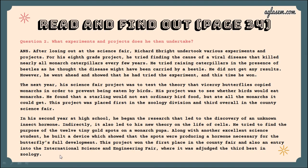Question number two: what experiments and projects did he undertake? After losing at the science fair, Richard undertook various experiments. For his eighth grade project, he tried finding the cause of a viral disease that killed nearly all monarch caterpillars every few years. He tried raising caterpillars in the presence of beetles, as he thought the disease might be carried by beetles. He won that year. His next project was to test the theory that viceroy butterflies copy monarchs to avoid being eaten by birds. He found that starlings would eat all the monarchs they could get. This project placed first in zoology division and third overall in the country's science fair.